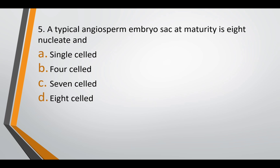Question five: a typical angiosperm embryo sac at maturity is 8 nucleated and — option A: single celled, option B: four celled, option C: seven celled, or option D: eight celled. The correct answer is option C — seven celled, eight nucleated. How is it eight nuclei and seven cells? It's because the central large cell has two polar nuclei, so that makes it eight nuclei and seven cells.